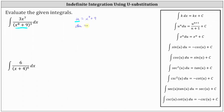Differential u is equal to the derivative of x to the eighth plus nine with respect to x times dx, which gives us eight x to the seventh dx. Looking back at the integral, we have three x to the seventh dx, not eight x to the seventh dx. So we can solve for x to the seventh dx by dividing both sides by eight. Simplifying, we now know that one eighth du is equal to x to the seventh dx.